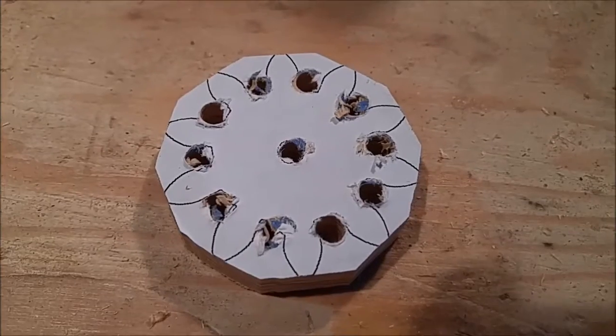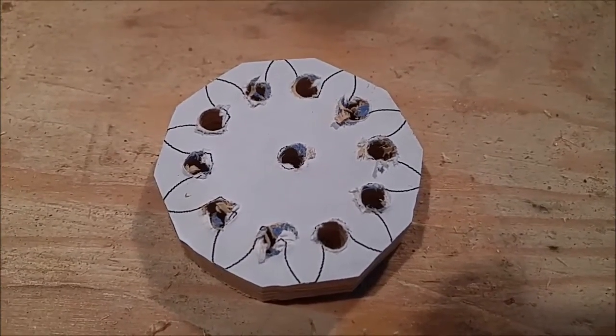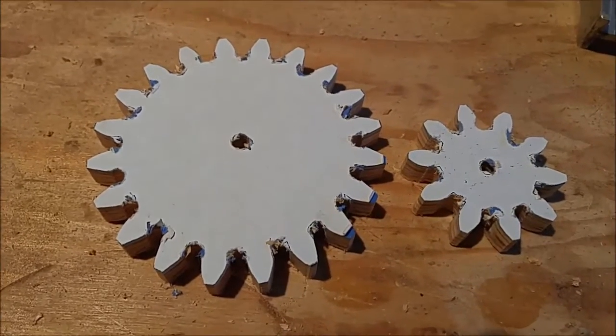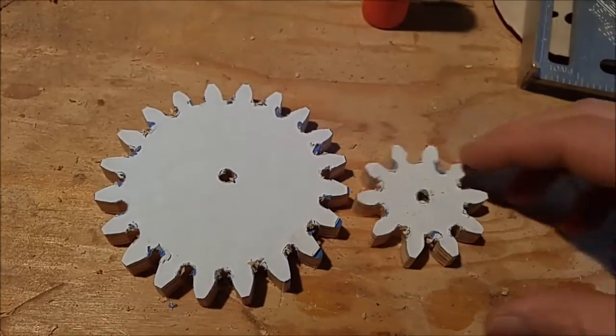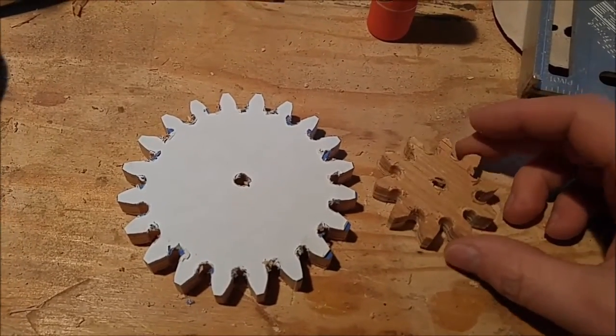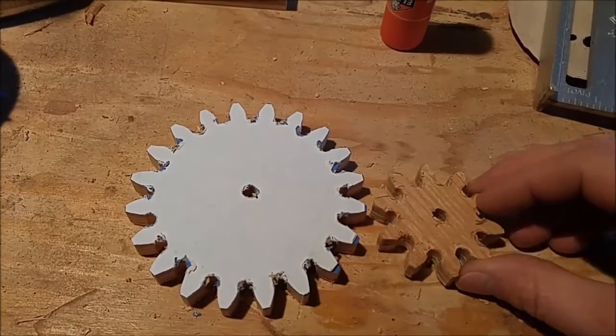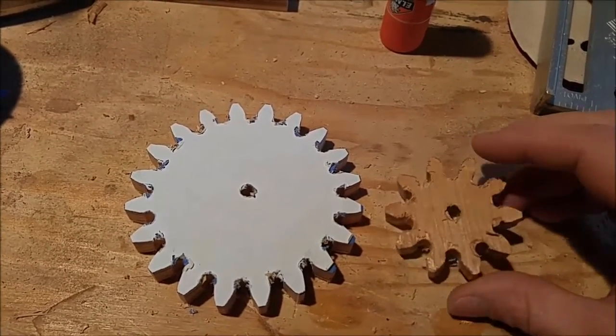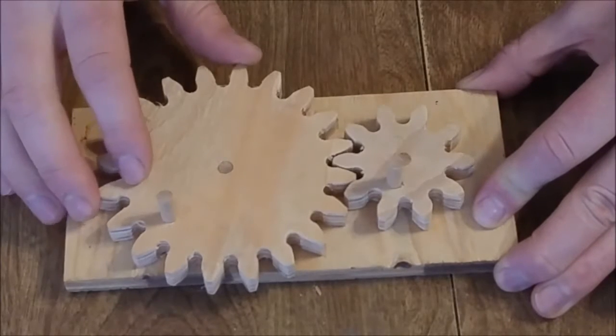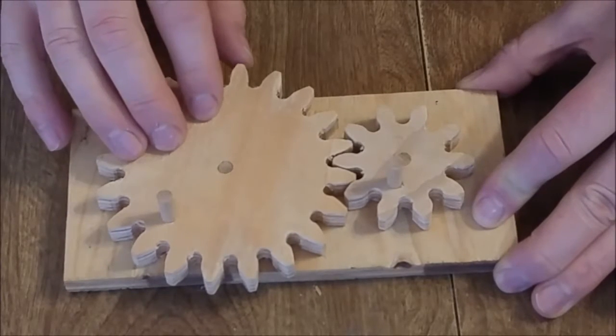Next step is going to be to bandsaw out the teeth of the gears. Bandsawed it out and overall they look okay. I'm going to have to sand them a little bit and get rid of a lot of this breakout at the bottom from the Forstner bit. That Forstner bit is much more accurate at cutting holes, the center hole and the bottom land area holes, than a regular drill bit.